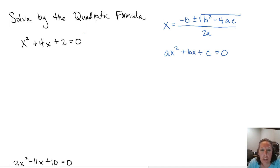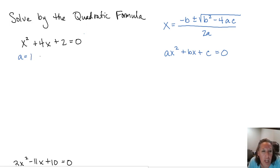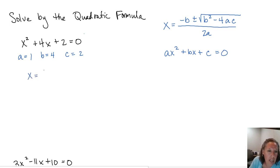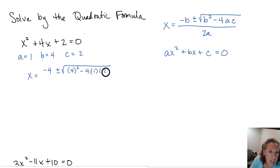Our first step is always to get our quadratic equation equal to 0. In this case, our a is going to be the coefficient on our x squared, which is an understood 1 in the equation x squared plus 4x plus 2 equals 0. Our b is the coefficient on the x, and our c is our constant where there are no x's. Make sure they're all on the same side of the equation. Then we plug in: x equals negative 4 plus or minus the square root of 4 squared minus 4 times a times c, all over 2 times a.